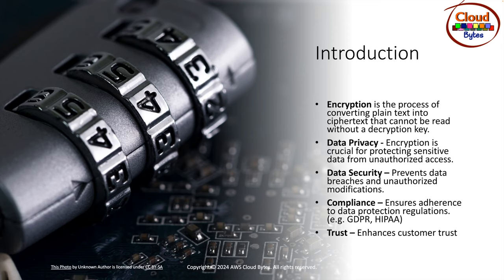Data privacy is crucial — encryption protects sensitive data from unauthorized access. For data security, it prevents data breaches and unauthorized modifications. For example, if someone is sending a message from point A to point B and is able to intercept it, they can change the message and its context. With strong encryption that is not breakable, you can prevent those kinds of data breaches where someone might decrypt, read, or tamper with your messages.